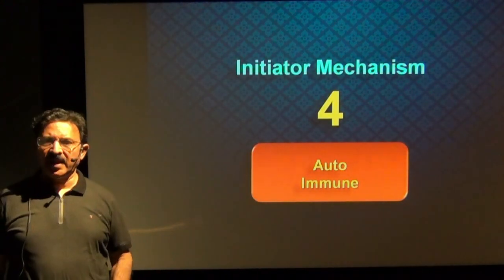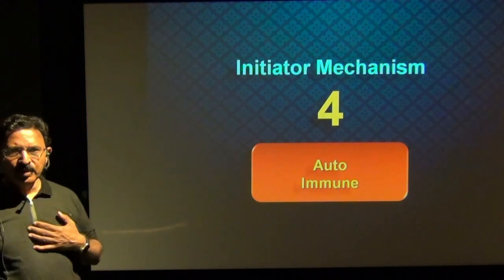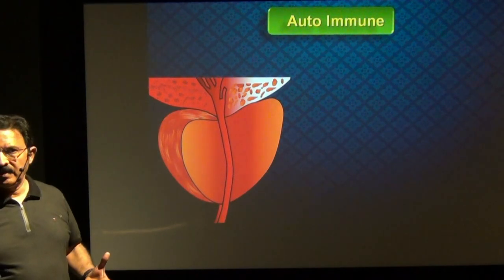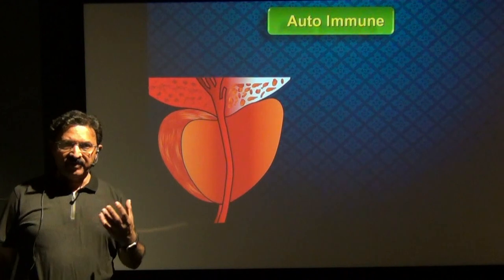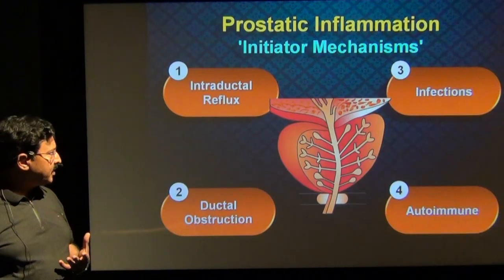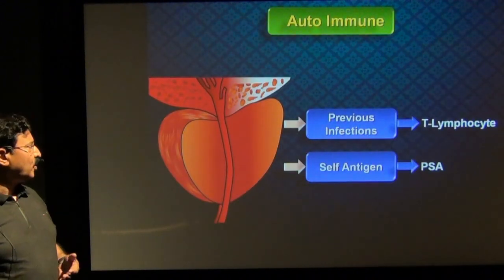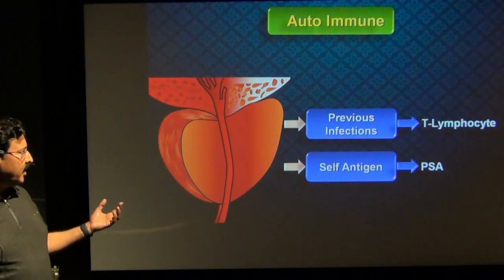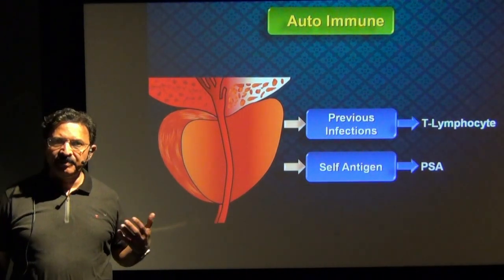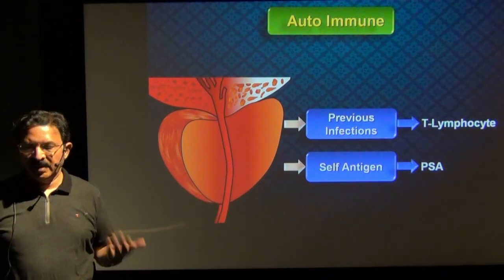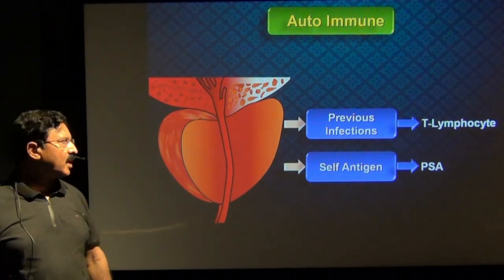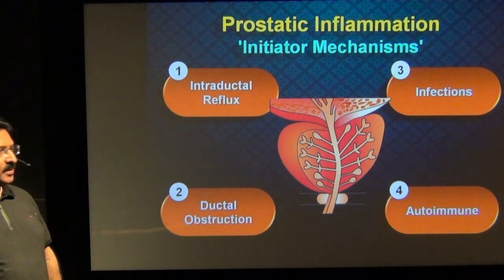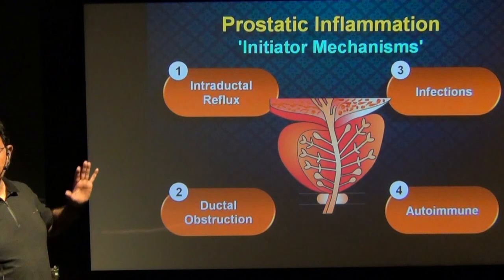The fourth initiator mechanism, which I think is the least common in my personal view, is the autoimmune reason. Because of autoimmunity, this prostate gland gets bigger — not because of hyperplasia, but because of inflammation in the prostatic stroma. This happens because a previous infection has sensitized T-lymphocytes in the prostate gland, or in some patients the PSA starts behaving like a self-antigen, there is an immune reaction to the PSA, and inflammation starts happening. So to sum up, these are the four types of prostate-centric initiator mechanisms.